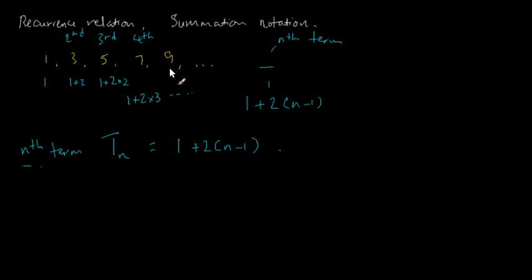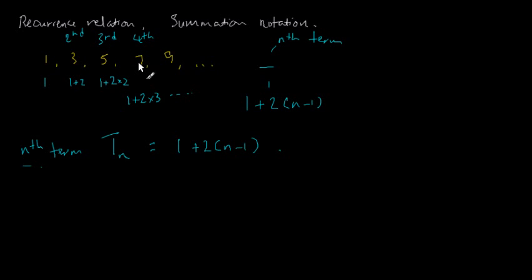A recurrence relation refers to the relation between one term and the next term. Looking at this sequence, you can get the second term from the first term by adding two, and you can get the third term from the second term by adding two. You can always get the next term by adding two. This idea of getting a term from the previous term is exactly what a recurrence relation means.